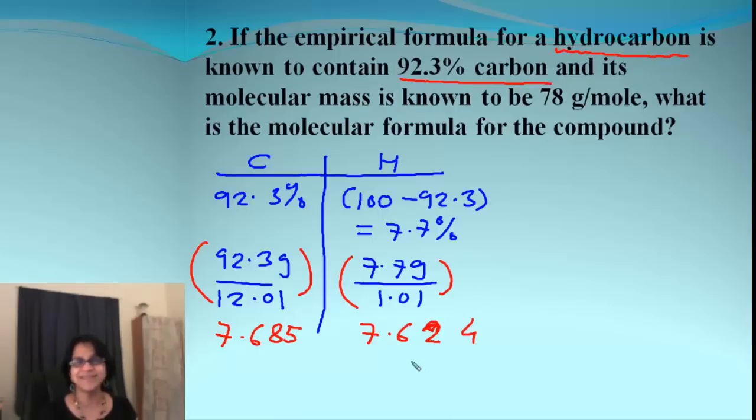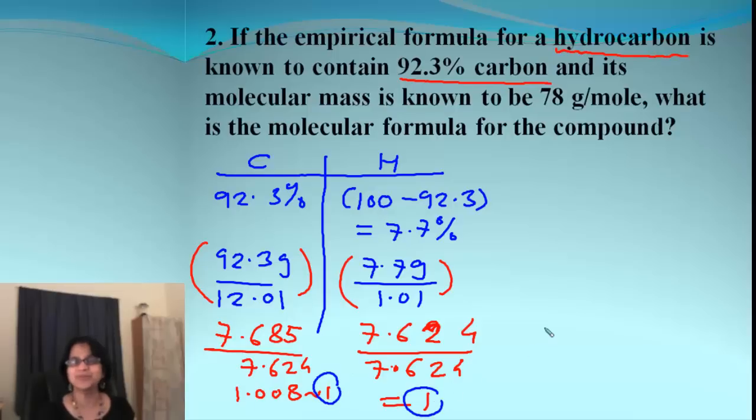Next step is divide by the smallest. The smallest is 7.624. This will be 1. If you actually solve that, you get 1.008, which you can round to 1. So we got the ratio 1 to 1. We don't have to multiply to get whole numbers. We already got 1 and 1 as the ratio. So the empirical formula is C1H1, or simply CH.